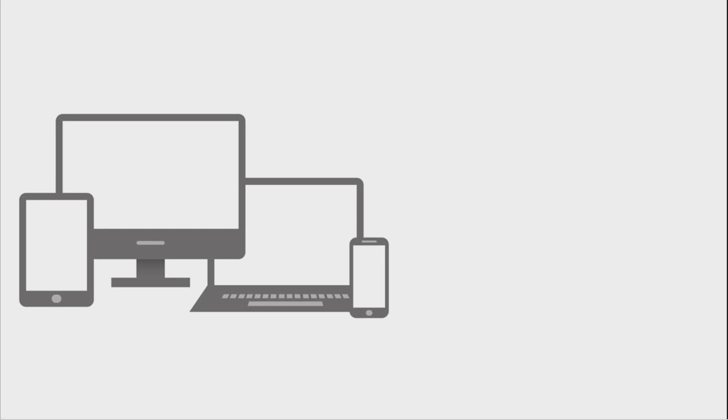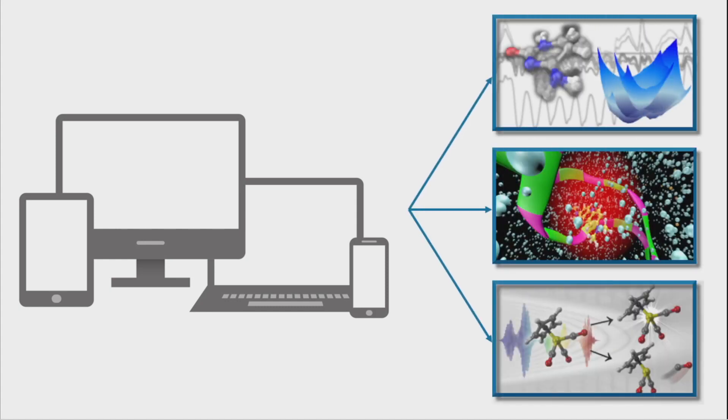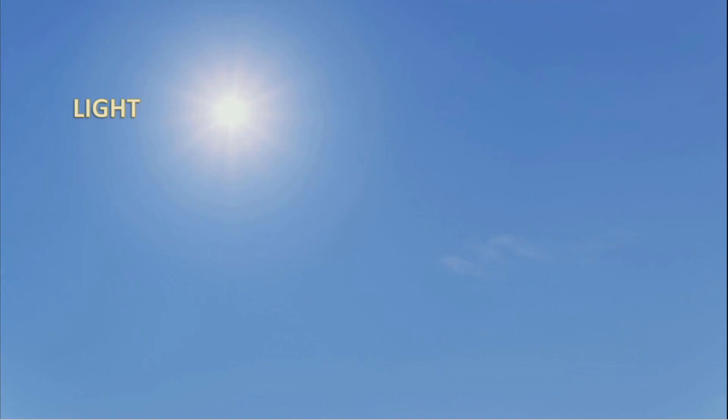The only thing a theoretical chemist does need is a computer. And with this computer, a theoretical chemist can simulate a whole range of chemical processes based on some mathematical formulations. For example, at the Institute of Theoretical Chemistry of the University of Vienna,